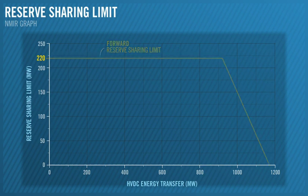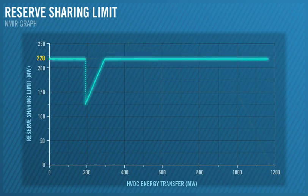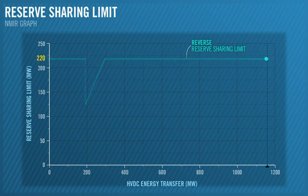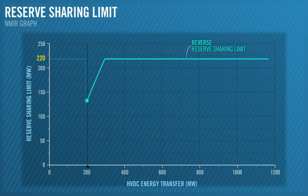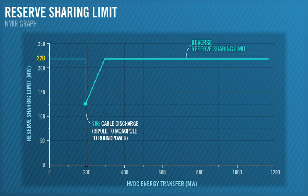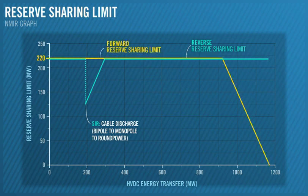The maximum reverse reserve shearing limit is also 220 megawatts and starts to decrease as it approaches pole minimum. After the 5 minutes cable discharge when transitioning from bipole to monopole to round power, the limit returns to 220 megawatts.